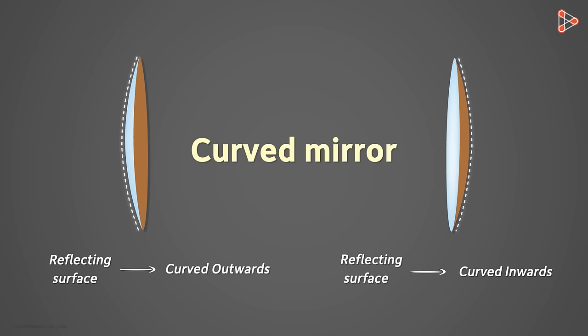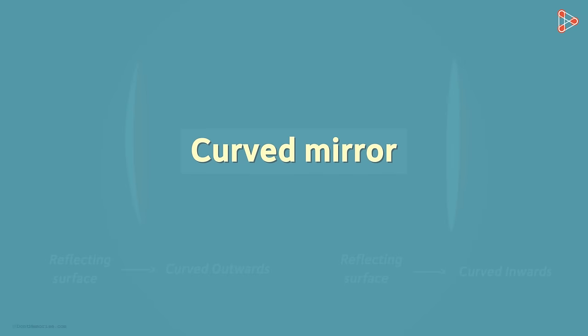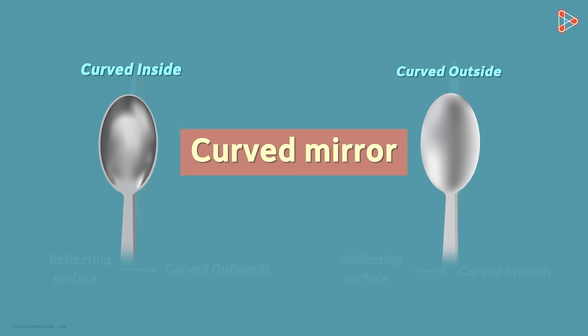Can you think of examples where you have seen curved mirrors? A shiny surface of a spoon is a good approximation of a curved mirror. A spoon has two reflecting surfaces, one curved inside and the other curved outside.